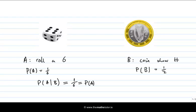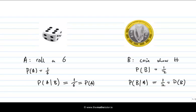We can turn things around and ask for the probability of flipping a head, given that the die rolls a 6. Again, the die doesn't affect the coin, so that should be the same as without the condition. You see this relation here between the conditional probabilities and the ordinary probabilities — they're the same.